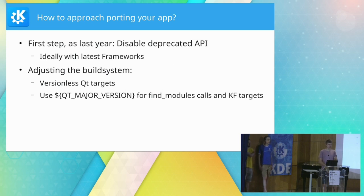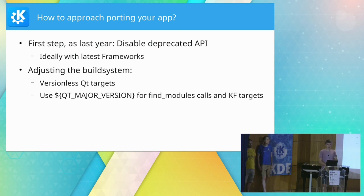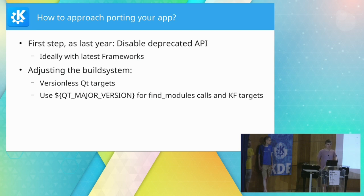That works in both bash and fish. Now we can get started on our apps. The first step, as Nico and I told you last year at Akademy, is to disable deprecated API. You should really make sure you're using the latest Frameworks because a lot of API that was removed in KF6 had back-ported deprecation macros and maybe even alternative API or porting aids back-ported to the KF5 branch — those are only in later versions. You then need to adjust your build system. For non-library code it's recommended to just use the versionless CMake targets, which is what we do in Plasma.